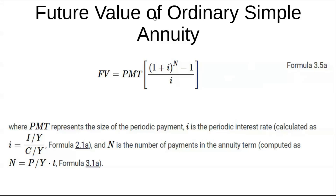The formula for future value of an ordinary simple annuity uses PMT (the periodic payment), I (the periodic interest rate), and N (the number of payments in the annuity term). For example, if you're putting in $10,000 every month, that's PMT. The periodic interest rate I comes from the nominal annual interest divided by the compounding frequency.